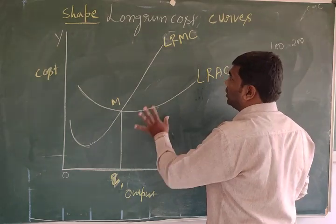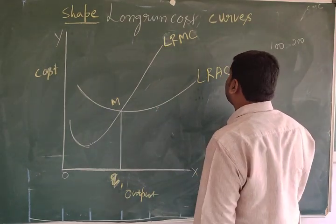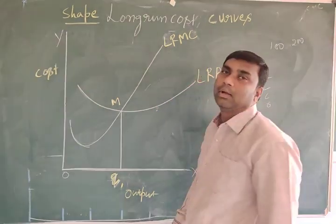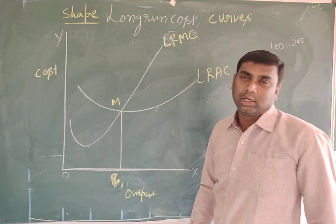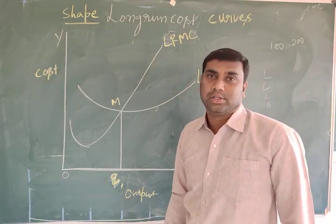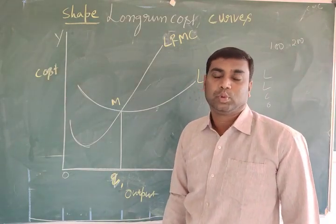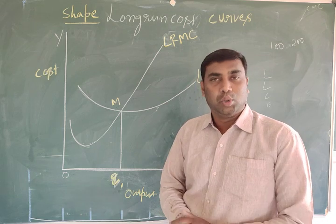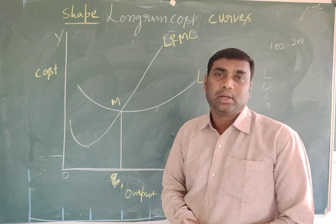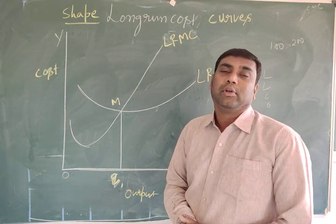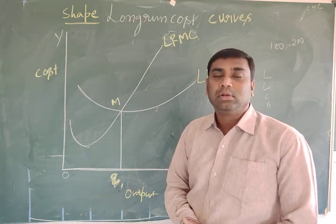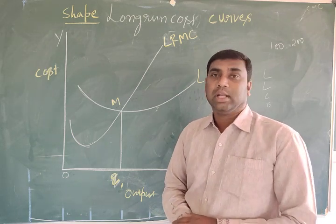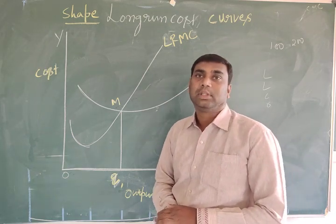This is the expression of the shape of the long-run cost curves. Up to this is the third chapter: production and cost. In the next class I will give the notes. If you have any doubt about this chapter or any topic, you can ask. Thank you.